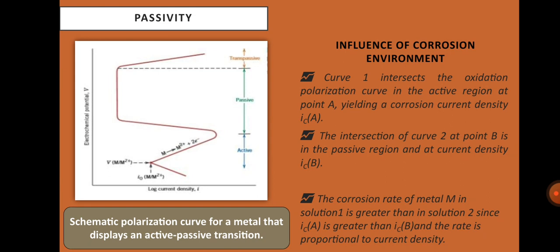Influence of corrosion environment: Curve 1 intersects the oxidation polarization curve in the active region at point A, yielding a corrosion current density Ia. The intersection of curve 2 at point B is in the passive region at current density Ib. The corrosion rate of metal M in solution 1 is greater than in solution 2, since Ia is greater than Ib, and the rate is proportional to current density.